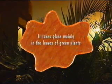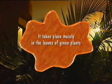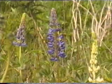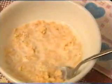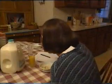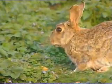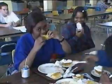It takes place mainly in the leaves of green plants. No matter what or how small the plant, it contains and stores energy. That's why we eat, and animals eat, to get the energy for movement and for warmth.